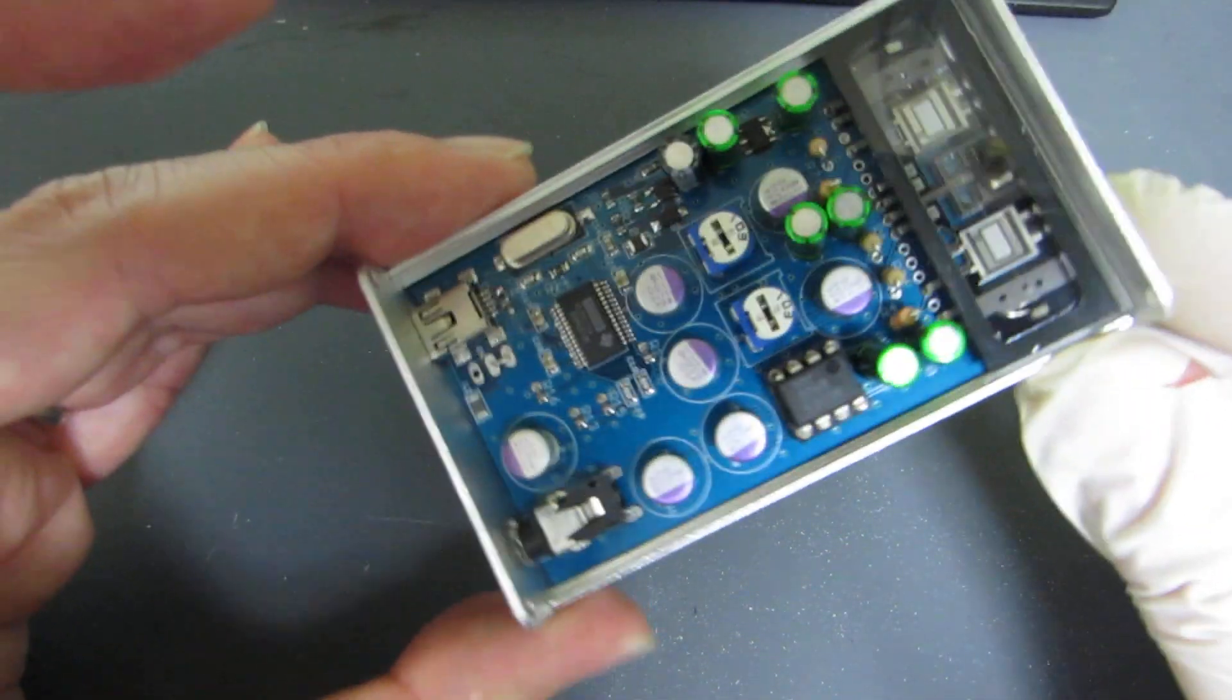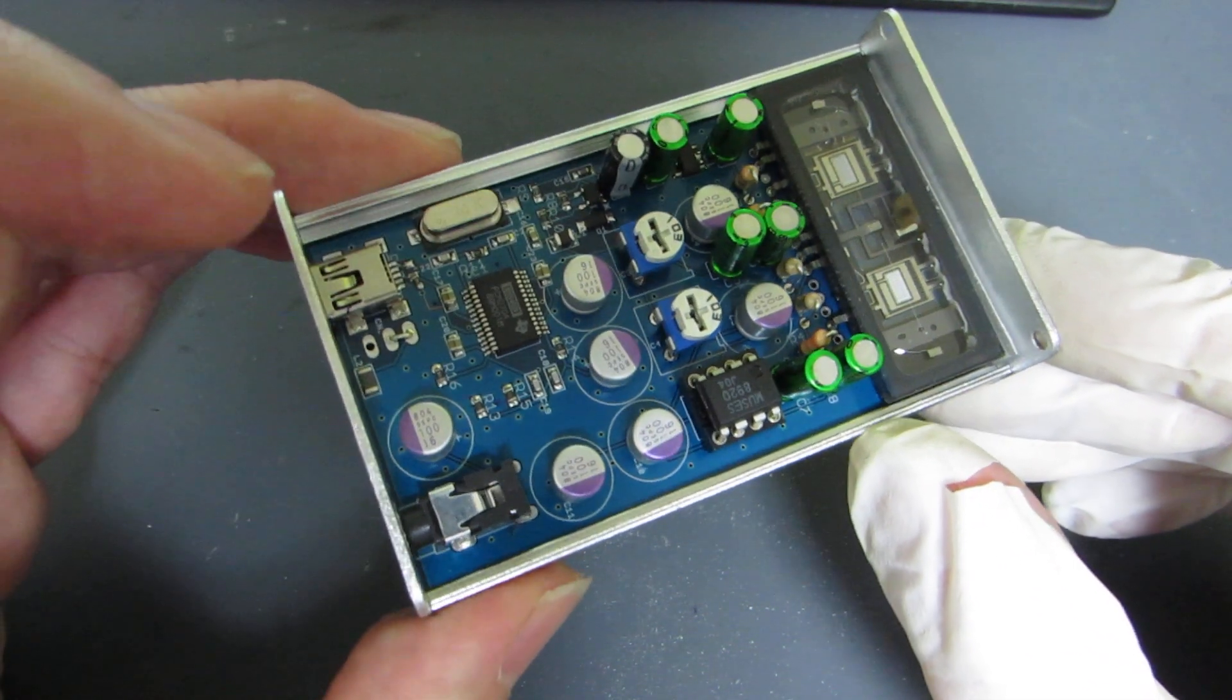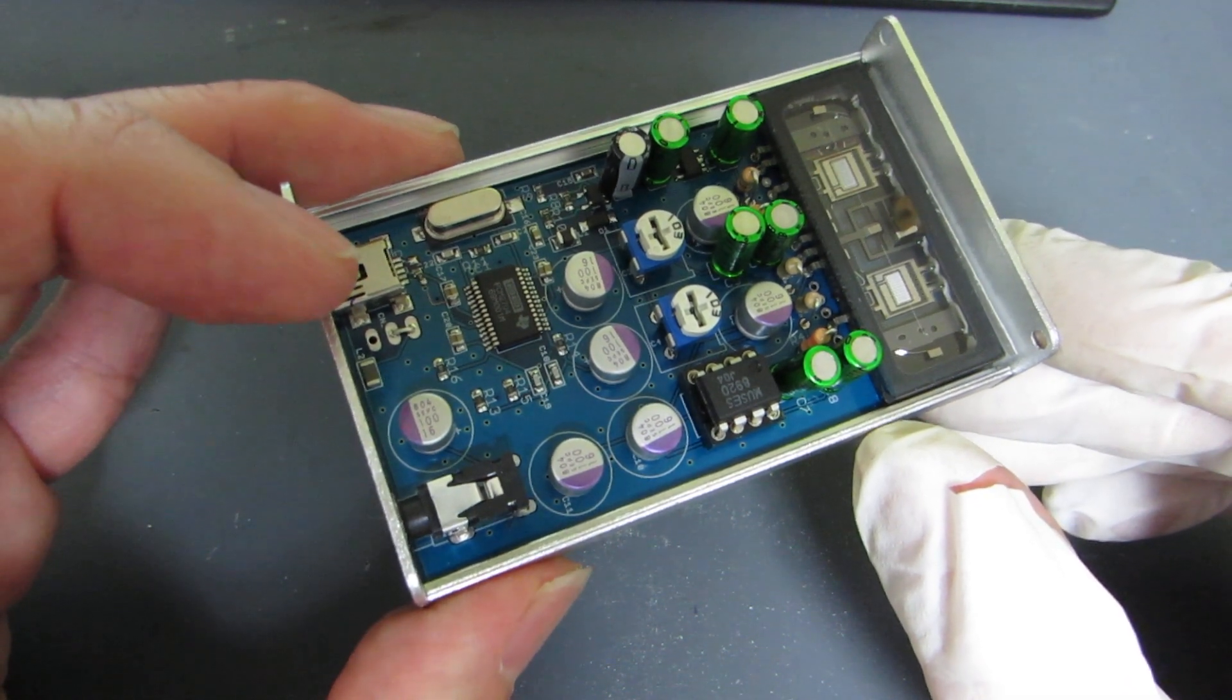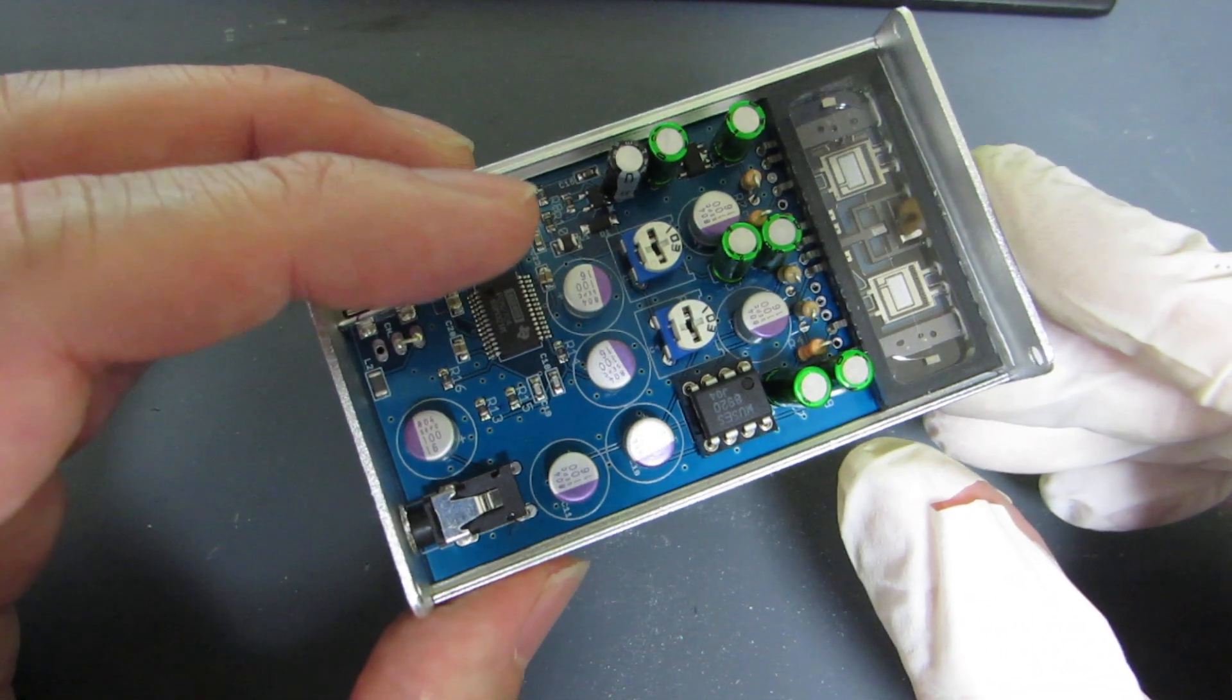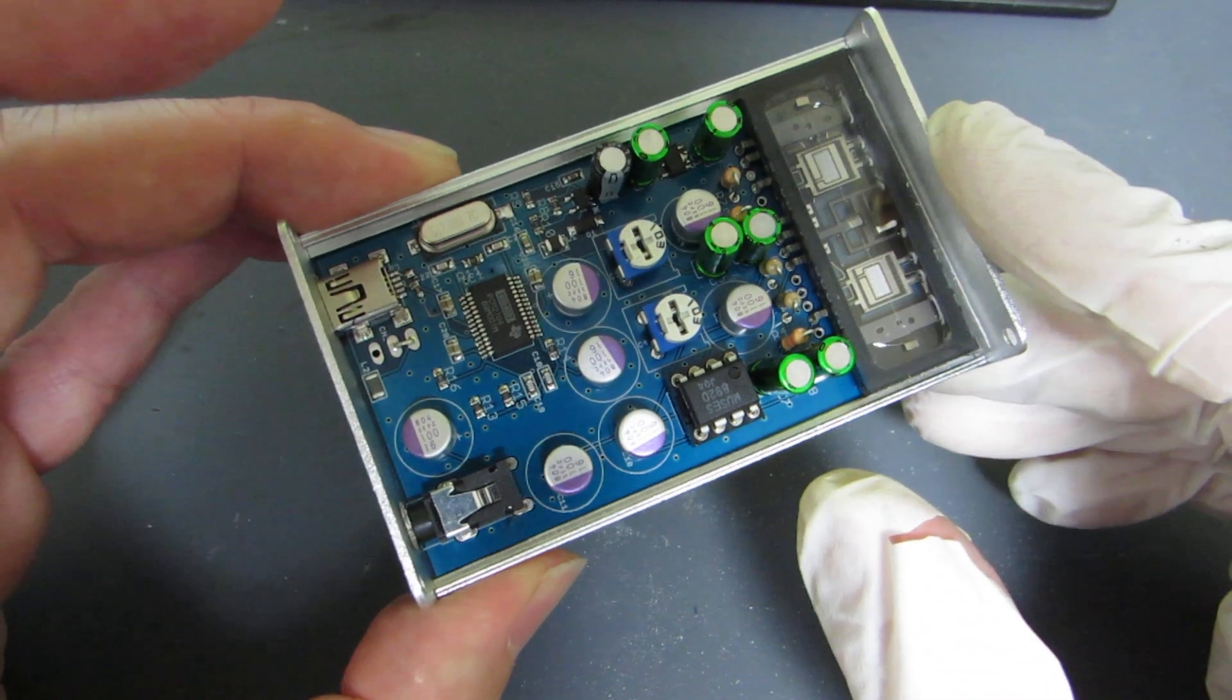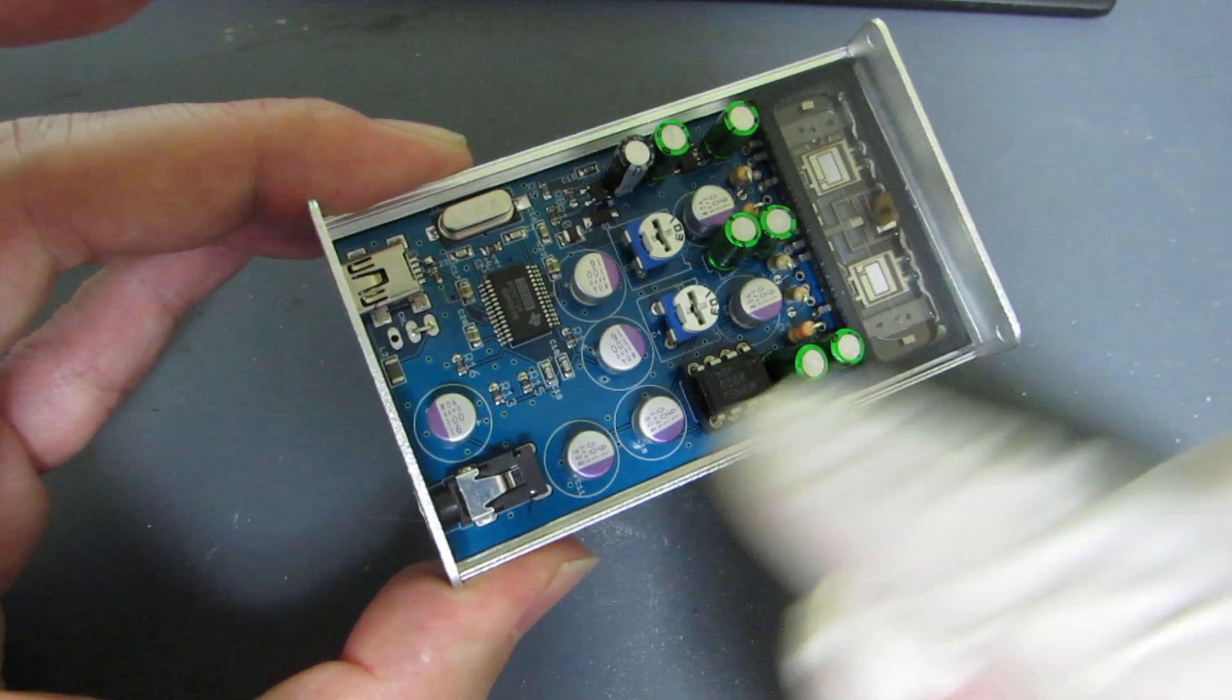As you see, this is a USB DAC driven new tube amplifier. Actually, the power supply is supplied by the 5V of the USB, and inside this box there is a voltage booster that generates 24V and drives the new tube and Muses operational amplifier.